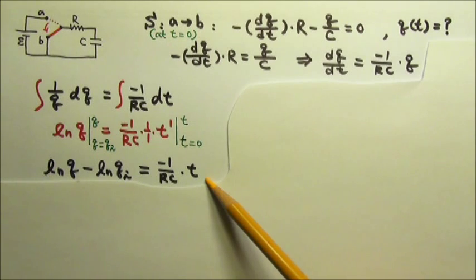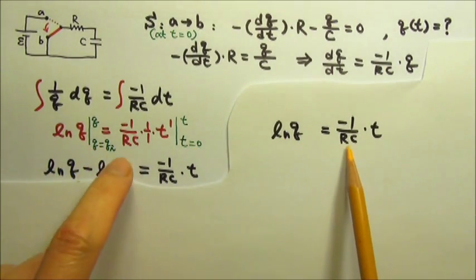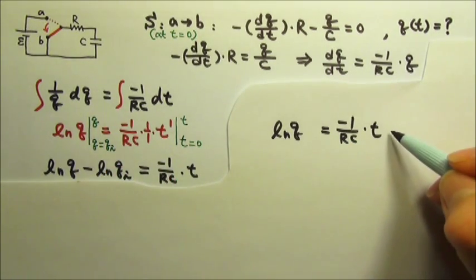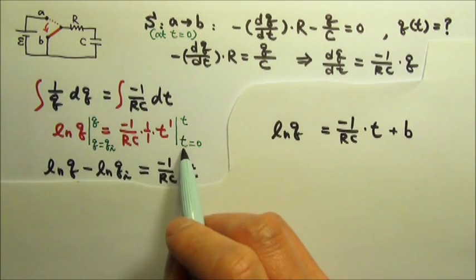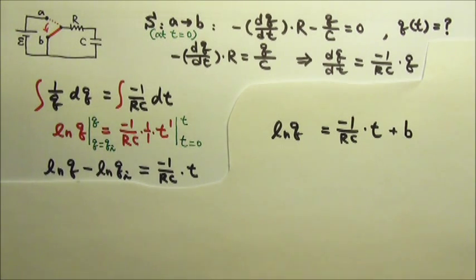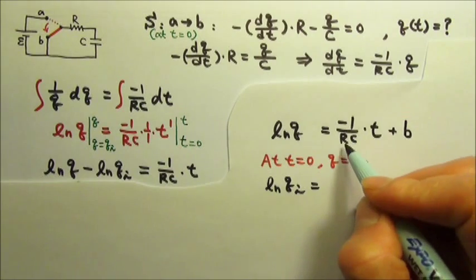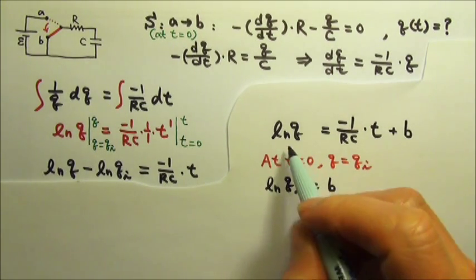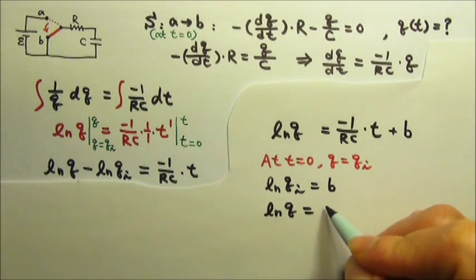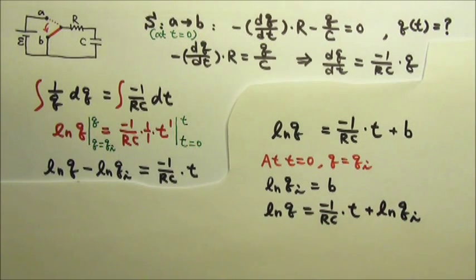Another way is to add a constant instead of using bounds. Starting with natural log q equals negative 1 over rc times t, we add constant b to this side, then use the boundary condition to find b. We know that at t equals 0, q equals the initial charge qi. So natural log qi equals b, since the t term is 0. Substituting b back in, the equation becomes natural log q equals negative 1 over rc times t plus natural log qi. Moving natural log qi to the left gives exactly the same result.